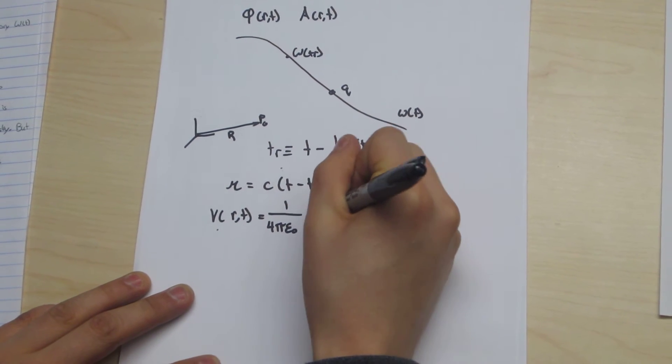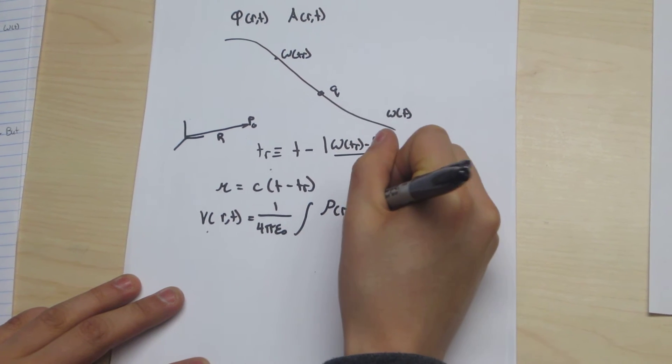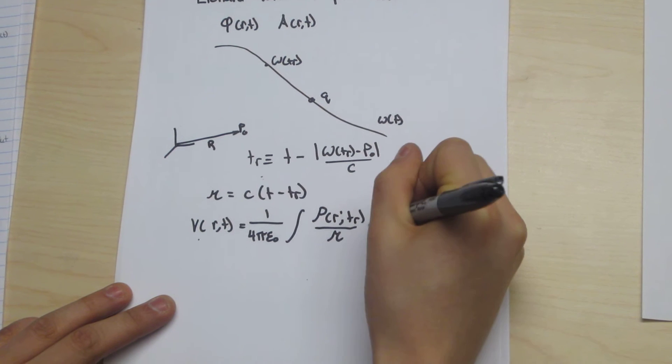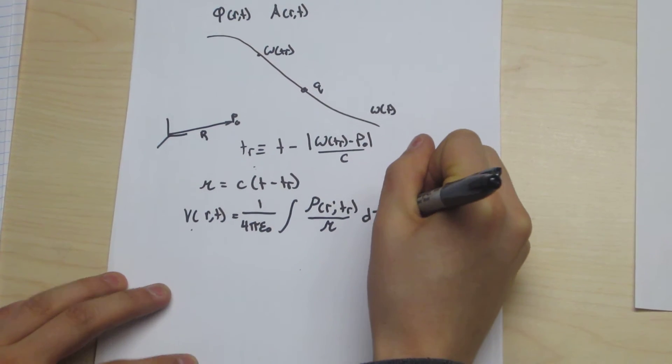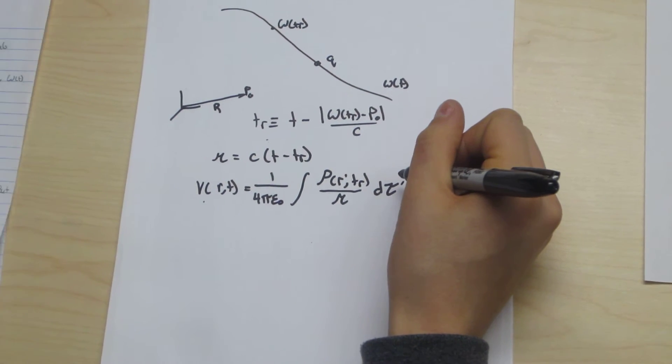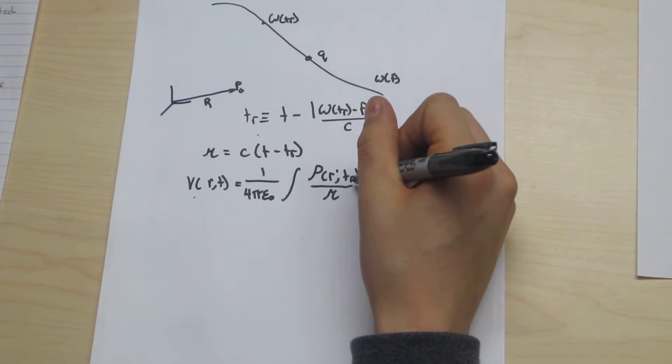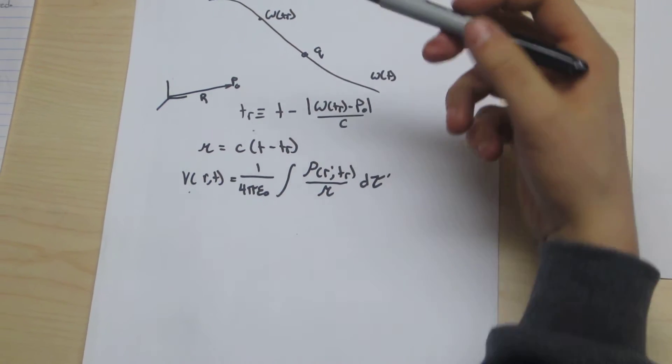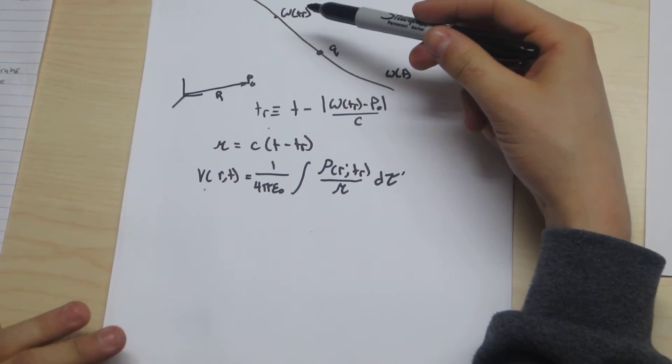Becomes equal to the integral where we are using t-r, the time-retarded potential, and r, the distance between our point p-naught and the time-retarded position omega t-r.